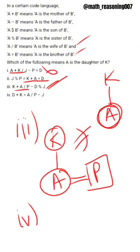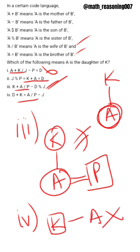Checking option 4: K equal to A — K is brother of A. So this does not satisfy. So option C is the answer. That's it guys.